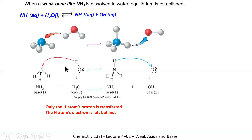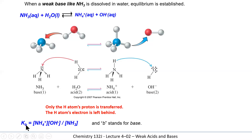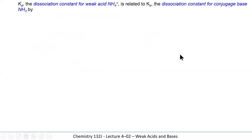Remember that only the proton of the hydrogen is transferred — its electron stays behind. We can write a Kb expression for the base: the concentration of ammonium ion times the concentration of hydroxide, divided by the concentration of ammonia. We leave water out because its activity is one.